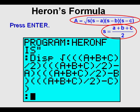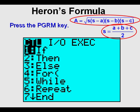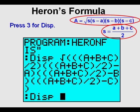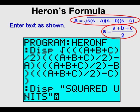Press Enter. Press the program key, arrow once to the right, and choose Display by pressing 3. Prepare to enter another string of text by pressing 2nd, then alpha. Now enter the text as shown: squared units. Be sure again to place it in quotation marks. Get out of alpha lock by pressing the alpha key. Congratulations — the program is complete.